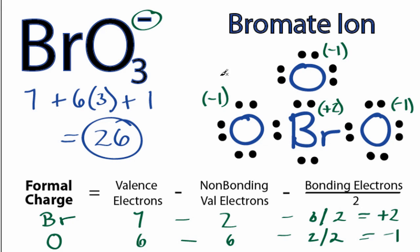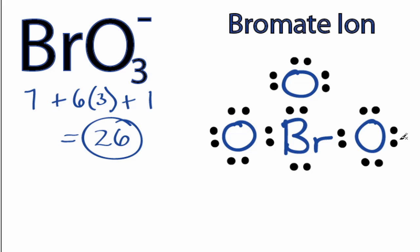Of course, we'll still have a negative 1 here, so we'll have to have a negative 1. To do that, we can form double bonds with the Oxygens and the Bromine. Let's take these valence electrons here and share them to form a double bond.